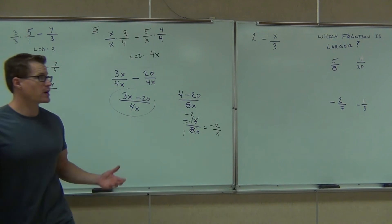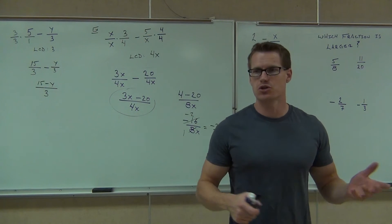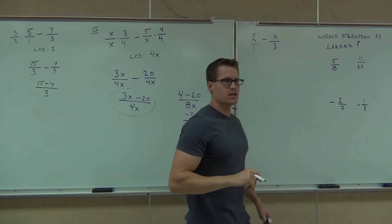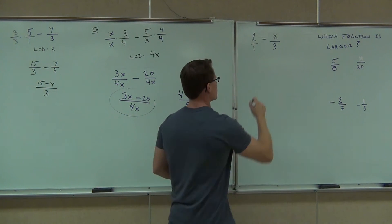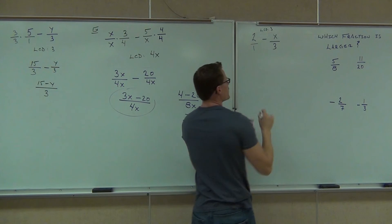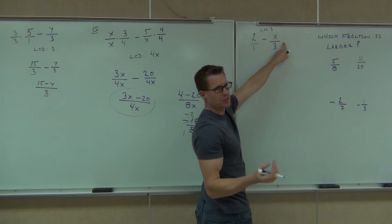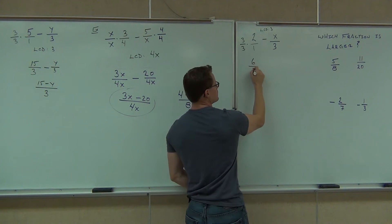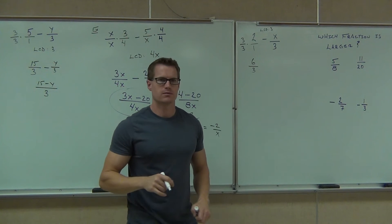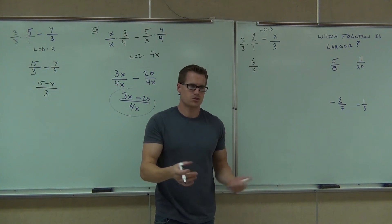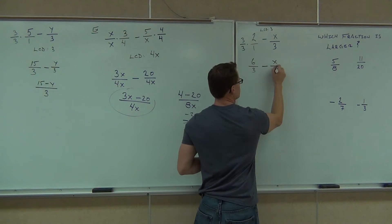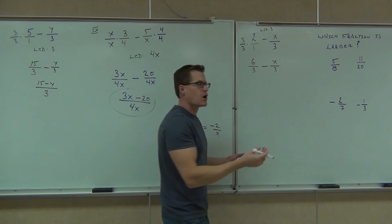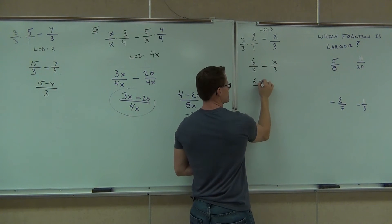2 minus x over 3. First thing we're going to try to do is make this into a fraction. How do we make 2 into a fraction? 2 over 1. Next thing we've got to do is find an LCD. What is your LCD for that problem? 3. LCD is 3. I don't need to multiply this one by anything because I already have the 3. However, here I need to multiply by 3 over 3. So I should be getting 6 over 3 — and you can check your work: is 6 over 3 still equal to 2? Yeah. Minus x over 3. You're going to make this one fraction. You already have the common denominator. You're going to get 6 minus x over 3.